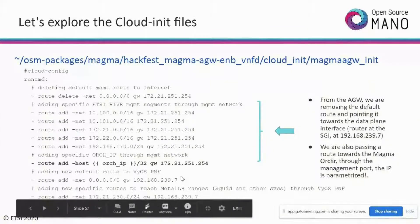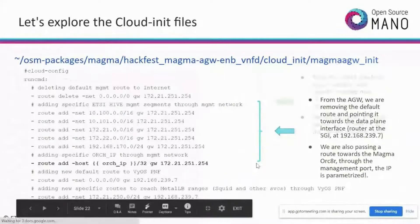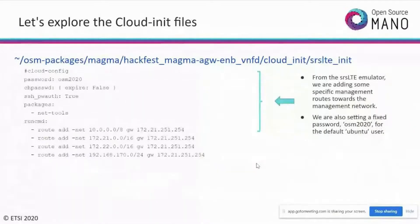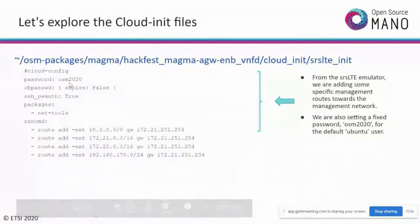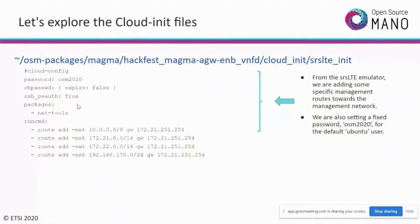Ensure you have the VIM account added, K8s cluster added, and the PDU ready before proceeding to slice instantiation. There will be more sessions on how to write a PDU YAML and add it. For instantiation parameters, in the Magma directory you'll find a params.yaml file used as an input file when instantiating the network slice. For each NSD, there are required input parameters including the orchestration IP that must be provided.